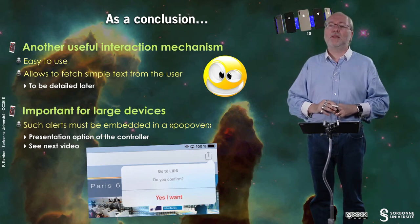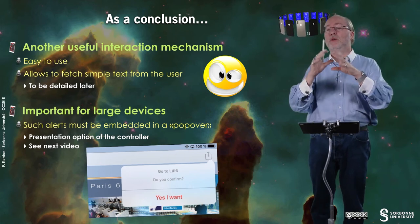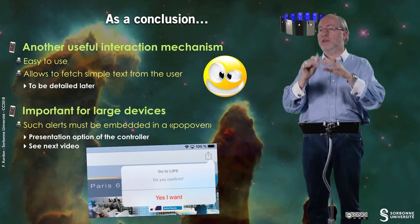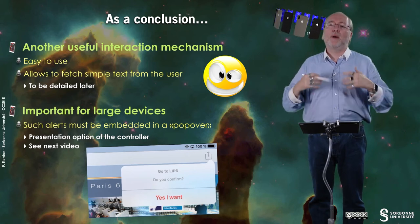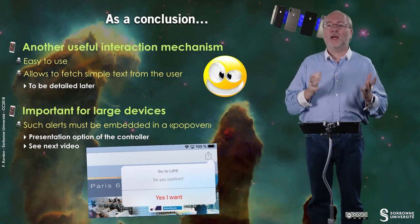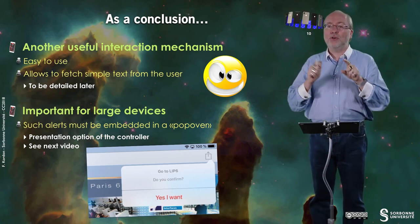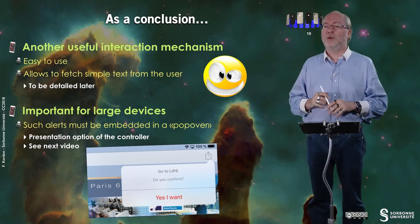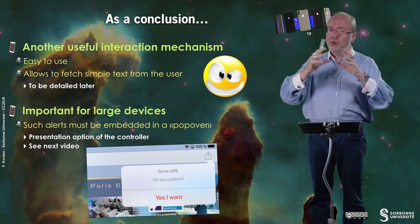One important thing concerns large devices. In large devices, there is a graphic chart that states that such alerts must be embedded in something called a popover. And this popover looks like that - it's sort of like in comics. You have this text all in a sort of bubble. And it's a presentation option of the controller and we will detail how to do that in the next video. It means that my current example, the one I showed you, the source, will not execute on a large device because I'm not doing what I should do. I'm not putting my actions in a popover. Thank you for your attention.